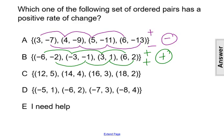Let's confirm that sets C and D have a negative rate of change. For set C, the x values go from 12 to 14 to 16 to 18—that's an increase. The y values go from 5 to 4 to 3 to 2—a decrease. We have that difference, so it's negative.